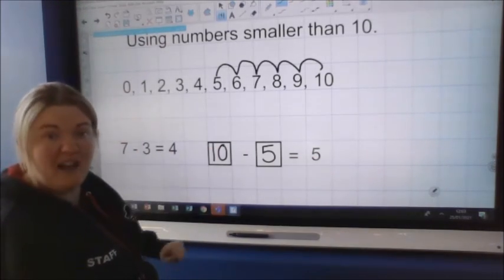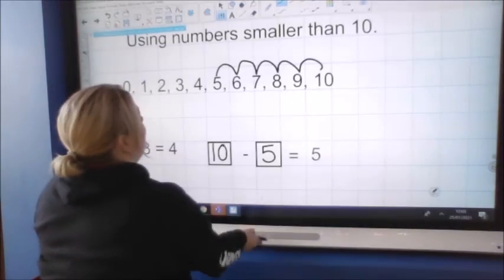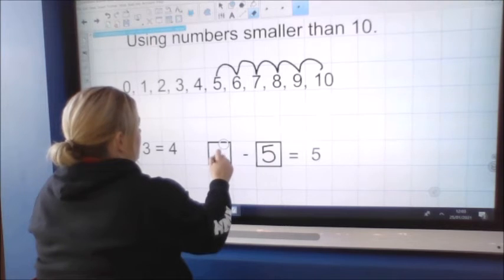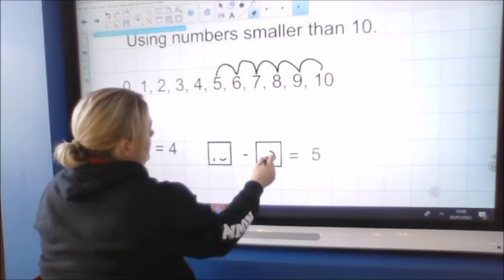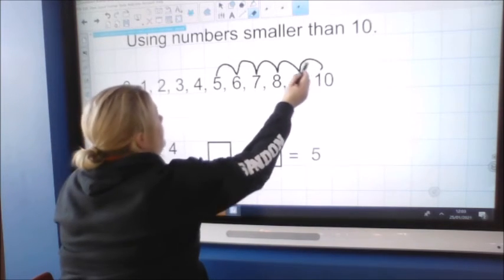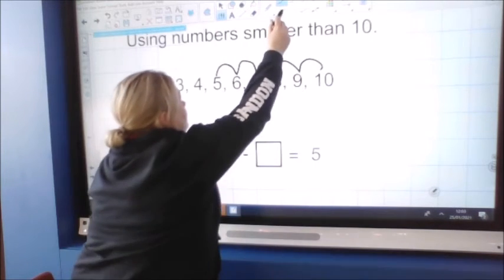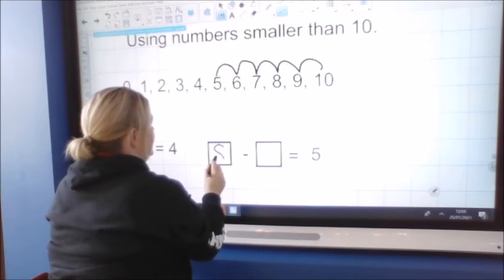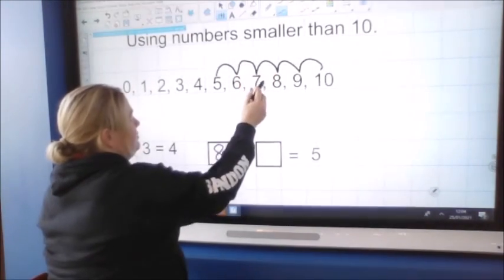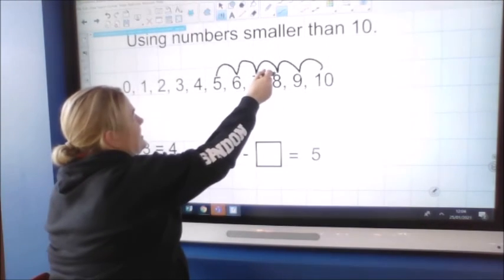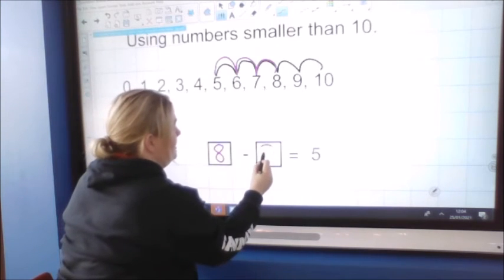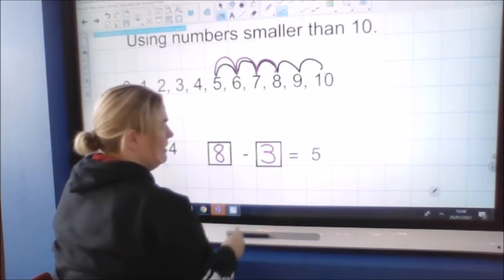And make sure that this first box here has a larger number than the answer. So you might have gone number eight. In fact, let's do that now. Let's do it together as another example. Now, we said eight. So I'm going to start at eight because eight is a bigger number than that five. Let me go on eight. I'll use a different colour so you can see. And I've got to get to five. So let's see how many jumps. One, two, three. So I know that eight take away three equals five.